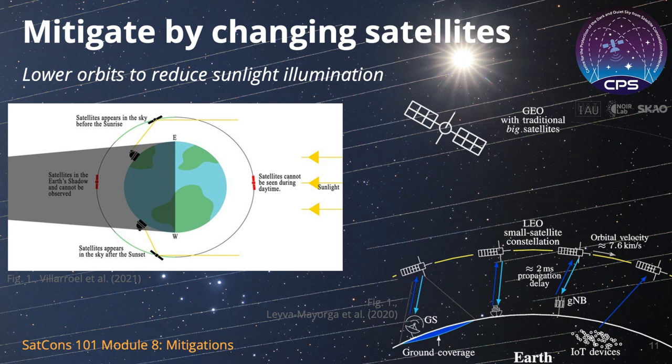There are certain trade-offs involved in this approach. Lower orbits mean that satellites in them move more quickly than those in higher orbits. Thus, they do not remain over any one part of the Earth for very long. Ensuring continuity of coverage requires many satellites to be overhead at once. That leads back to the need for larger constellations of satellites with the problems described earlier. Engineers continue to work on satellite constellation designs that attempt to address these concerns.